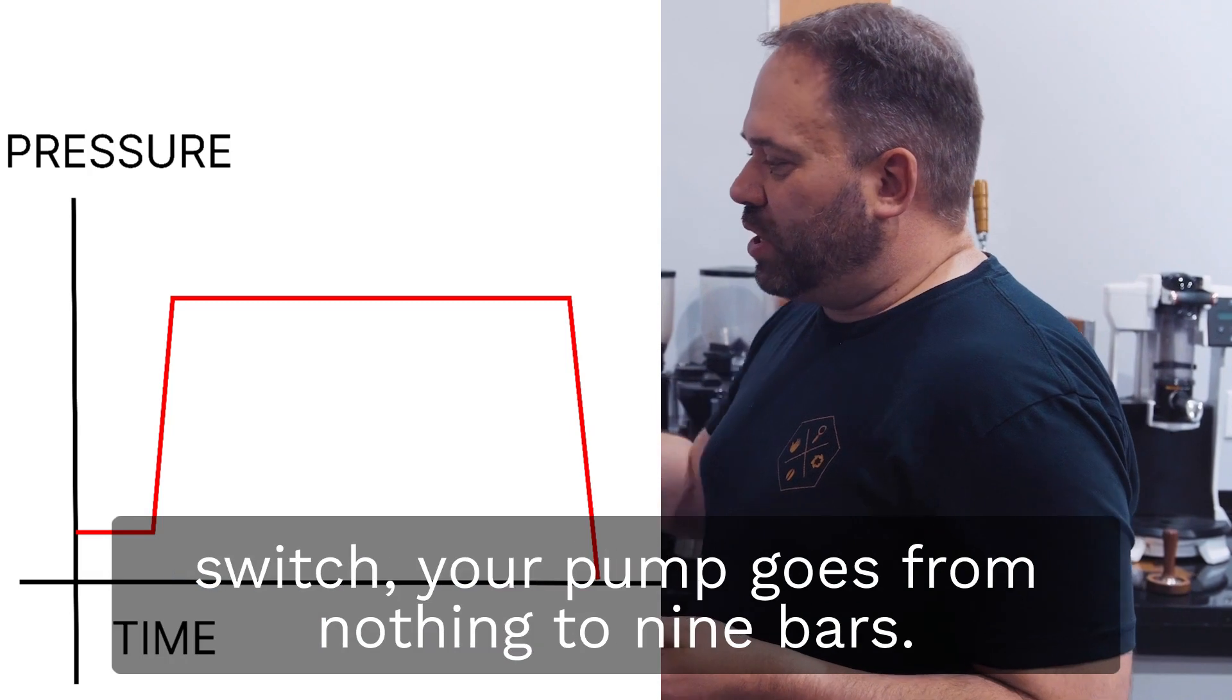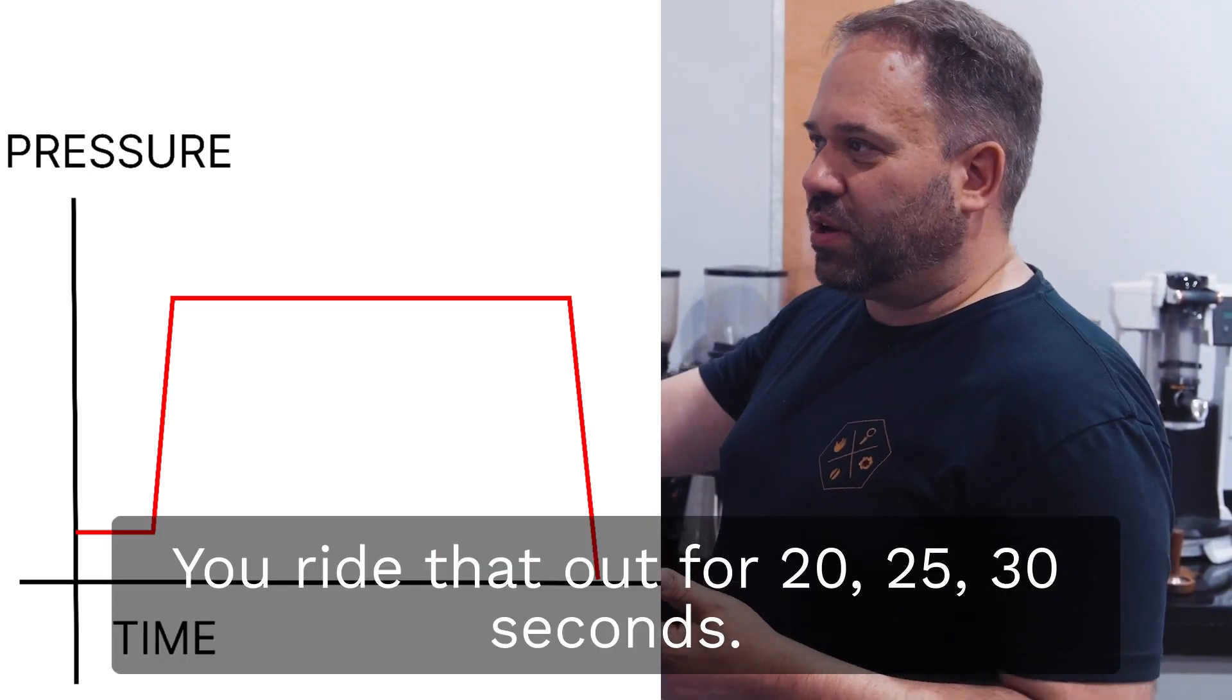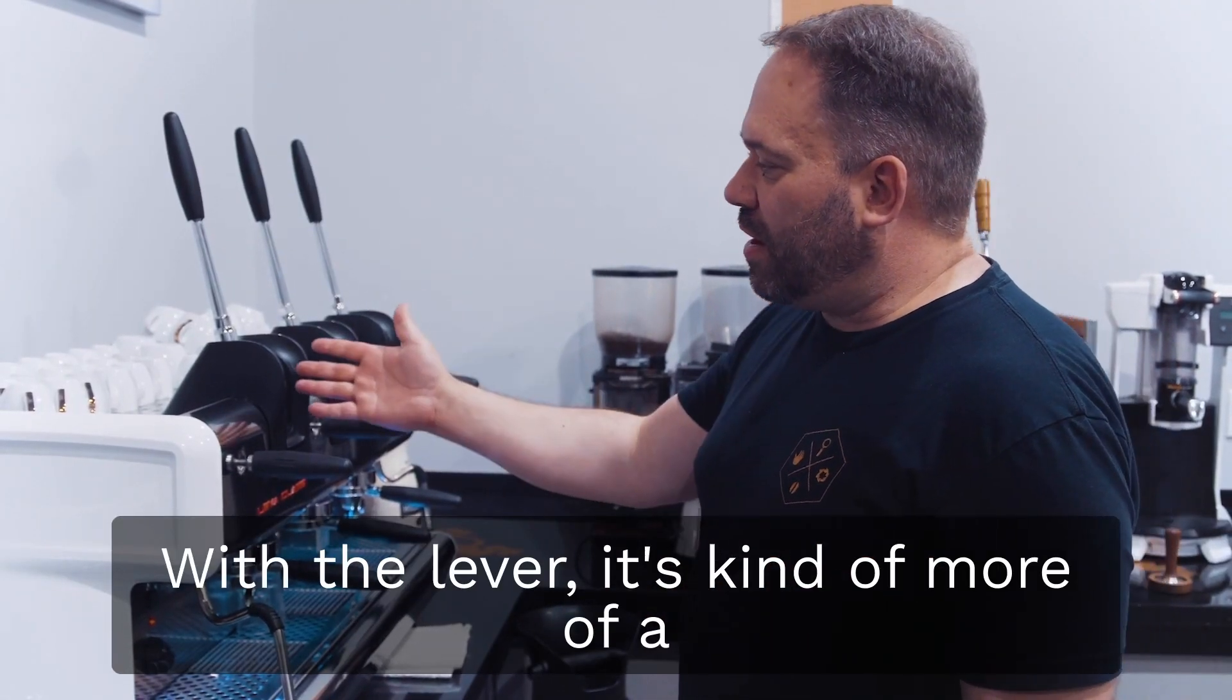At time zero you flip a switch, your pump goes from nothing to nine bars, you ride that out for 20, 25, 30 seconds, click off, it drops down. You get a rectangle.